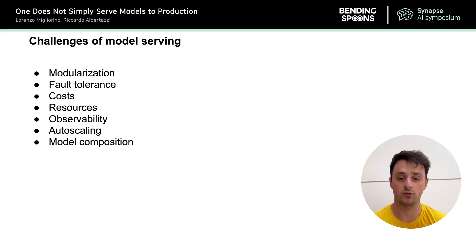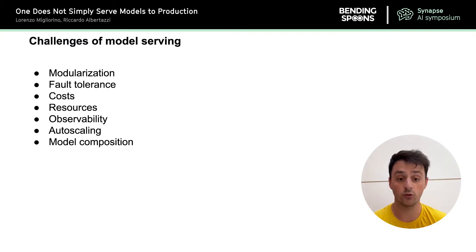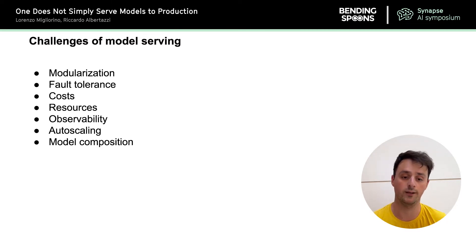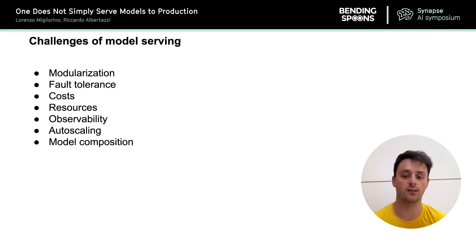Then resources — the ability to find GPUs and utilize them as much as possible. Observability: we want to understand at any time what is happening within our systems so we can better understand the behavior and performance and quickly act when there are problems. Then auto-scaling: we want our infrastructure to scale according to traffic so that we can run predictions as fast as possible while keeping costs down during low traffic. And finally, model composition: a single user prediction may be composed of several predictions and steps executed by different models running on different machines, so our infrastructure needs to support this distributed environment.